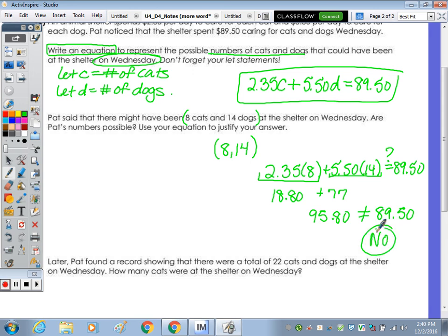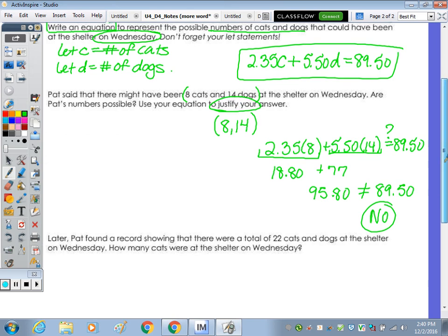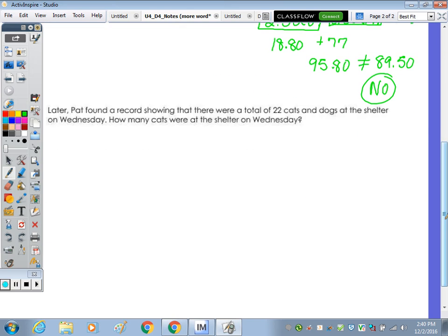Don't forget to answer yes or no and justify your answer is just the math. You don't need to explain in detail. Later, Pat found a record showing that there were a total of 22 cats and dogs at the shelter on Wednesday. So with that second piece of information we can determine the exact number of cats and dogs. A total of 22 cats and dogs. Let's write our one equation from above, 2.35 C plus 5.5 D equals 89.50. This equation for a total, C plus D equals 22.